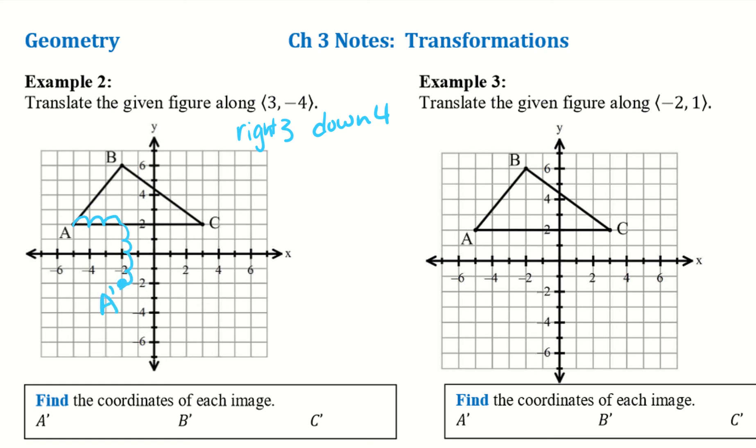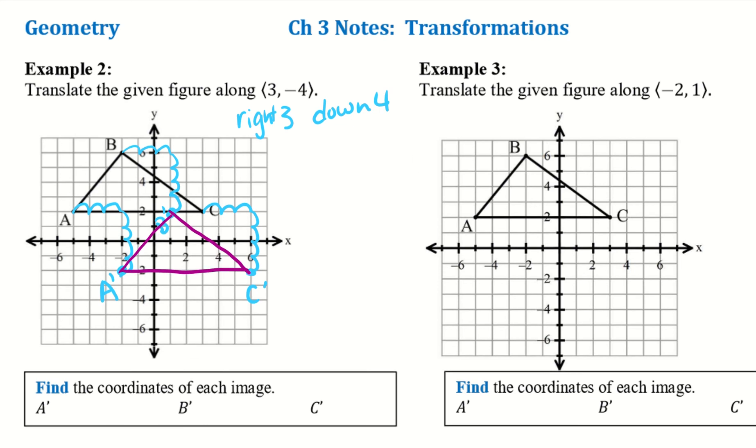Remember, we do A prime. Alright, B goes right 3 and down 4. So there's my new B prime. And then C, same thing, right 3, down 4. So there's C prime. So now I can connect the dots between all three points that I just made. And I have now translated my graph. So we want to state the coordinates for the image. So A prime, we're at negative 2, negative 2. So we're going left 2 and down 2. B is positive 1 and then positive 2. And C is 6, negative 2.